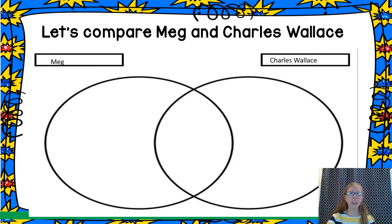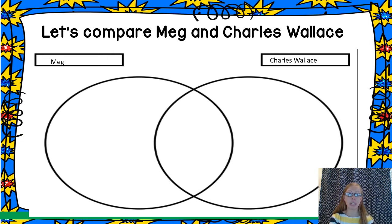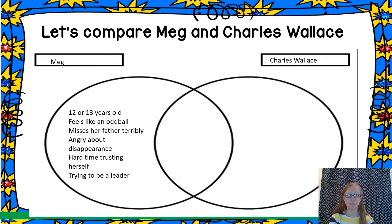As we look at two of our main characters, we've got Meg and Charles Wallace. We're going to use this Venn diagram to compare and contrast them. So let's start with Meg.